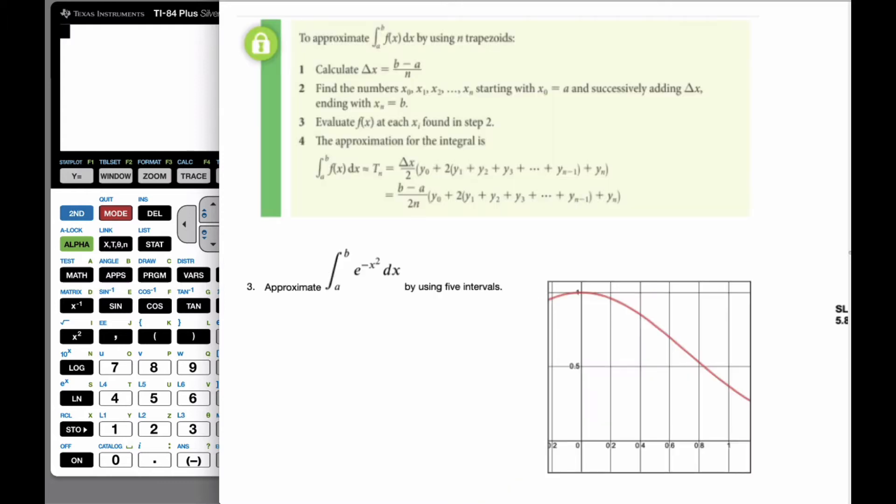So, how do we actually use it? What we're going to do is the first thing we're going to do is calculate delta x, which is going to be the intervals between a and b. And I know in this particular problem, I want a to be 0 and b to be 1.